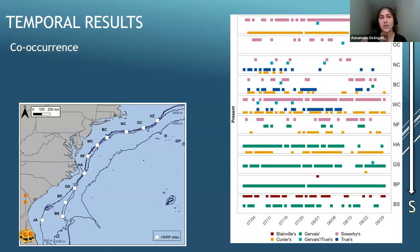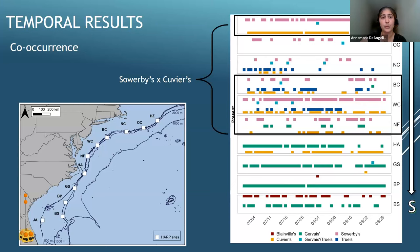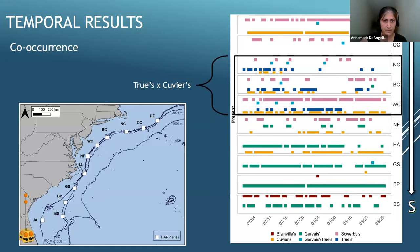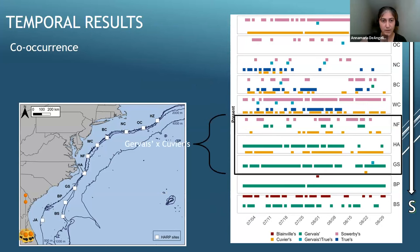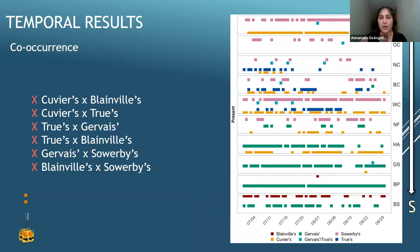From the classification tree looking at co-occurrence: Sowerby's co-occurred with Cuvier's mainly in the mid-Atlantic and northernmost site; True's and Cuvier's co-occurred in the mid-Atlantic; Gervais and Blainville's co-occurred at the southern edge of our study area; and Gervais and Cuvier's were also mid-Atlantic around Cape Hatteras. Some species did not co-occur at any sites.